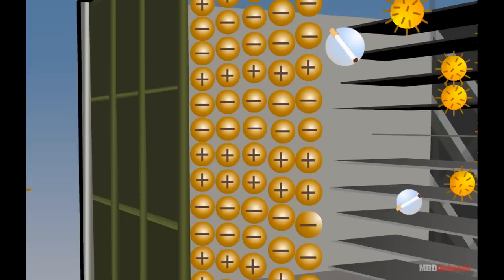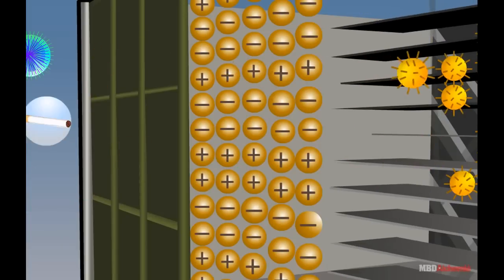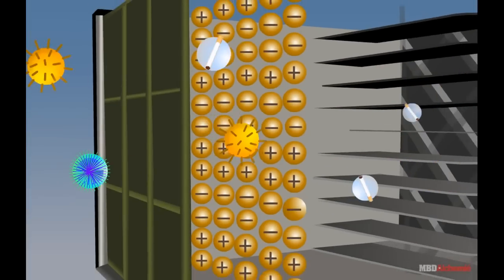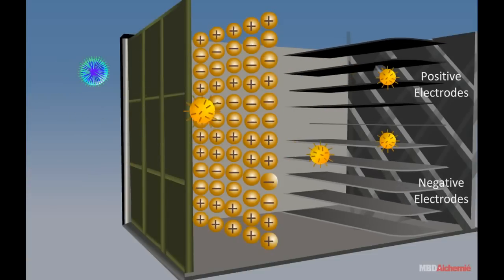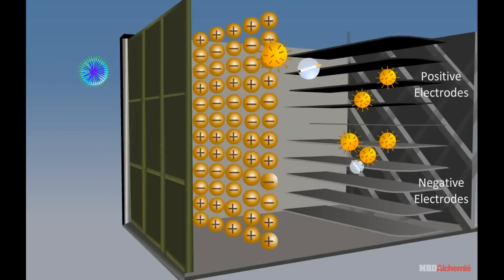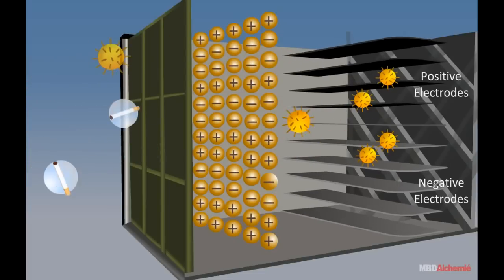The free electrons get attached to the gaseous particles moving up the stack. The particles get negatively charged and are attracted to the positive electrode located on the inner wall of the stack and settle down there.